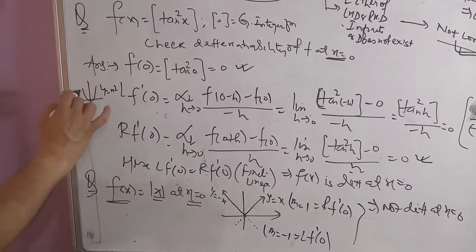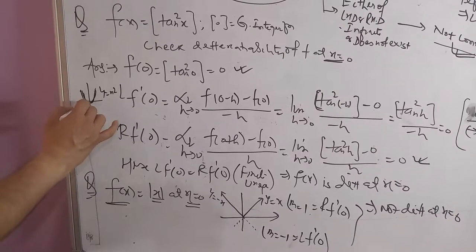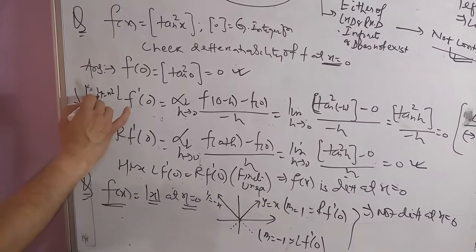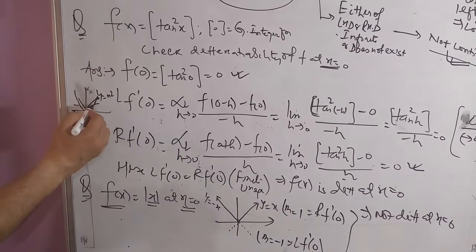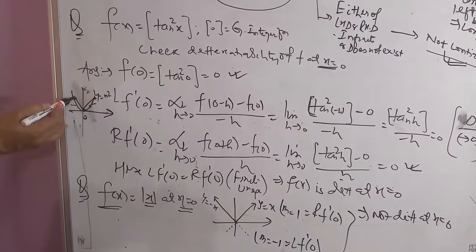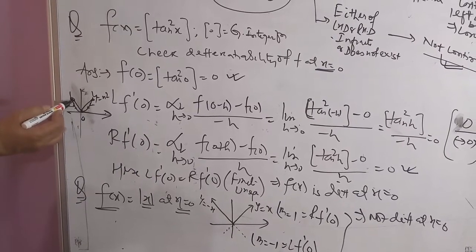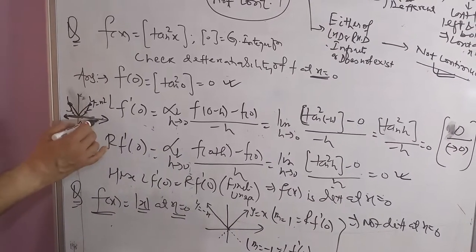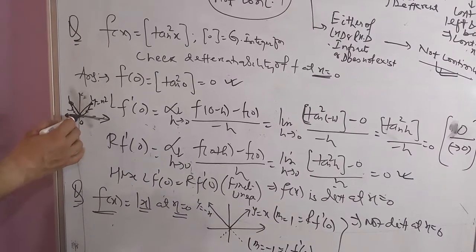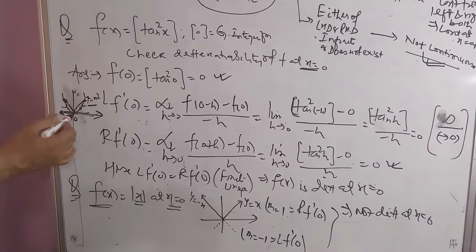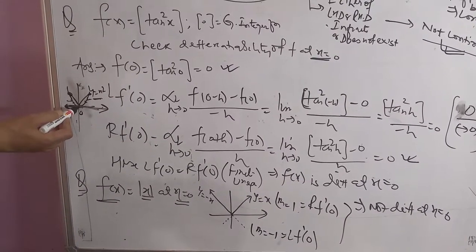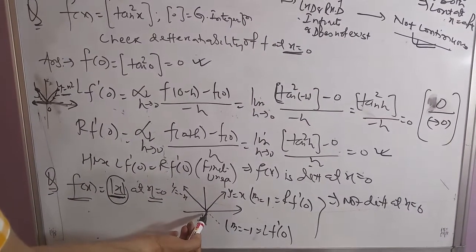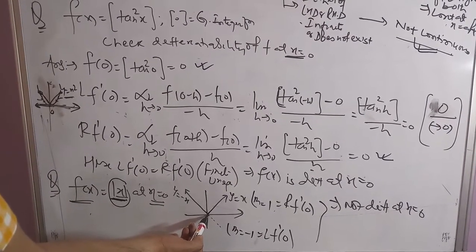For example, consider y equal to x squared — a parabolic curve. At x equal to 0, as a point on the curve tends to the origin, the chord becomes the tangent. From both sides the tangent coincides, so the function has a unique tangent and is differentiable at x equal to 0. For y equal to mod x, however, there is directly a corner point at x equal to 0, so the function is not differentiable there.